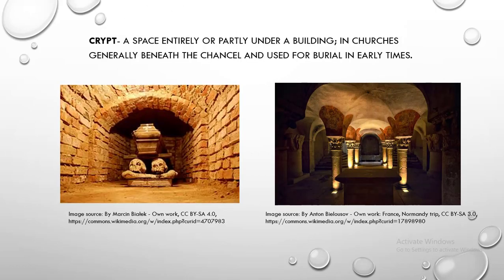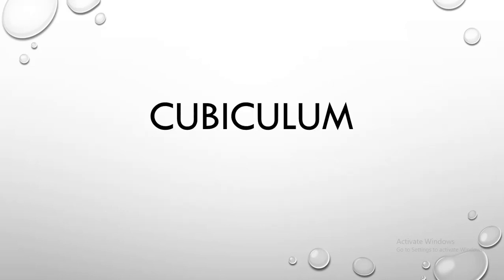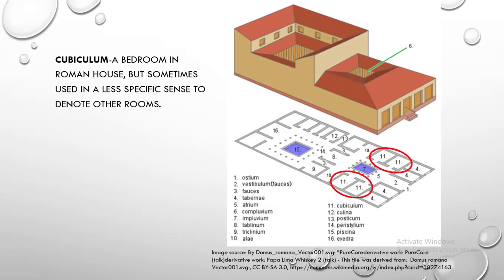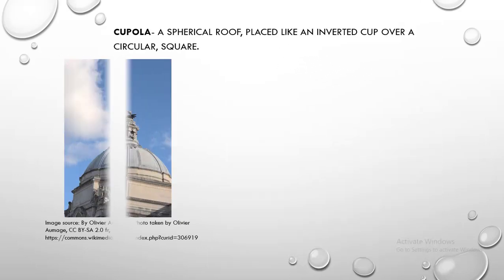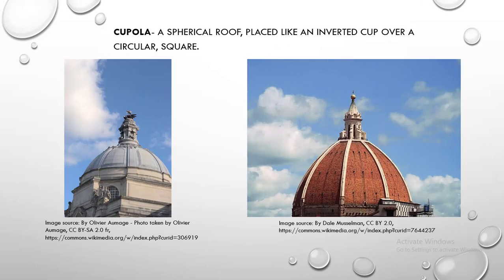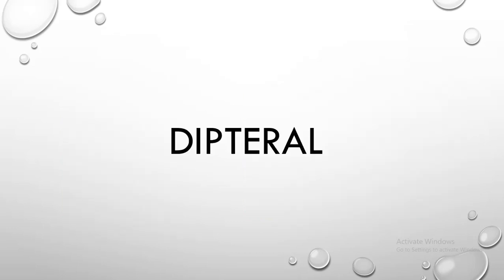Crypt. Crypt is a space entirely or partly under a building, in churches generally beneath the chancel and used for burial in early times. Cubiculum. Cubiculum is a bedroom in a Roman house, but sometimes used in a less specific sense to denote other rooms. Cupola. Cupola is a spherical roof placed like an inverted cup over a circular or square base.